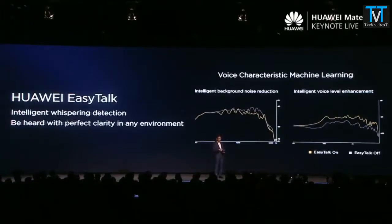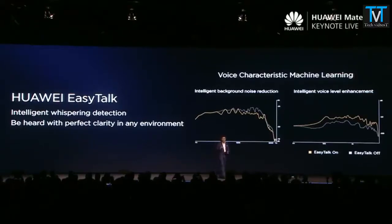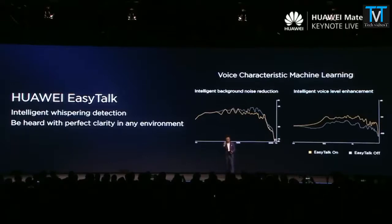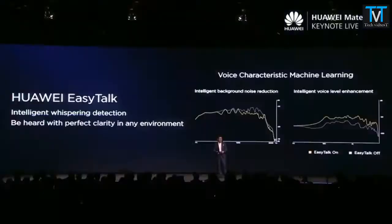Sometimes you make a phone call in a noisy area and have to speak loudly. With the AI engine inside, you can even whisper in a noisy area. The phone uses intelligent background noise reduction and can identify your specific voice — not other noise or other people speaking — even when you're whispering. The phone learns from your voice and understands you. We call it 'Easy Talk' — an AI engine that brings real value.